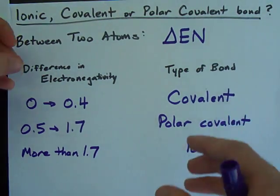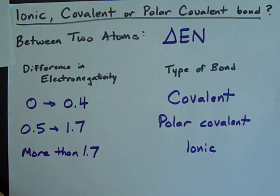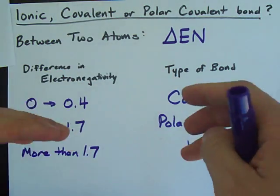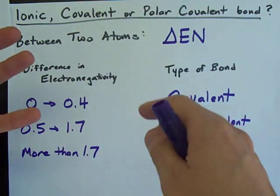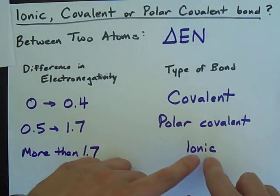If they have very different electronegativities, then one atom is going to steal electrons away from the other. One will become positive, one will become negative, and you'll get an ionic bond.